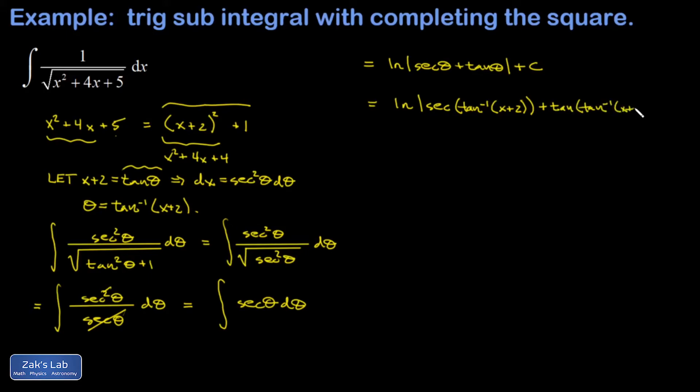The tangent of the angle whose tangent is x plus 2 is x plus 2, so that's done. But the secant of the angle whose tangent is x plus 2, that requires a little geometric construction.